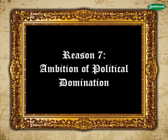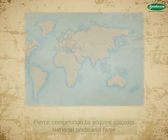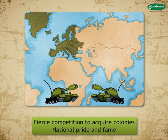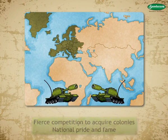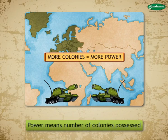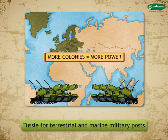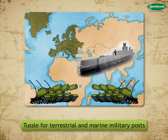Reason 7 — Ambition of Political Domination: The imperial European nations fiercely competed with each other to acquire colonies. In the name of national pride and fame, as power was associated with the number of colonies possessed, they had to strengthen their security systems to win and maintain these colonies. This led to a huge tussle for terrestrial and marine military posts of strategic importance.